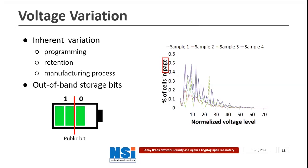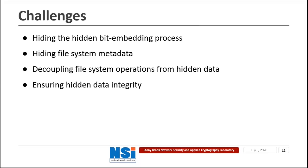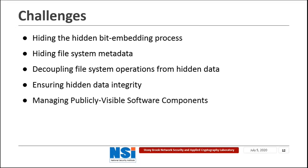Although the voltage variation in NAND Flash devices allows us to store extra bits, this is not enough for a PD scheme, as we need a way to organize all those out-of-band storage bits to be valid data in the user space. Here we list a few challenges when designing a PD scheme based on out-of-band storage bits in NAND Flash. First, we need to hide the hidden bits embedding process. Second, we need to hide the file system metadata required for the hidden data. Third, we need to decouple the file system operations from the hidden data so that the existence of hidden data doesn't change the original file system operations behavior.